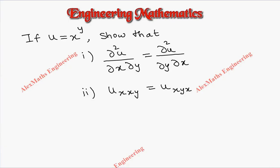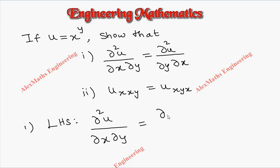Hi students, this is Alex. u is given as x^y. We have to show that ∂²u/∂x∂y equals ∂²u/∂y∂x. Let's take the first part. We are going to take the left-hand side, that is ∂²u/∂x∂y. We rewrite this as ∂/∂x of (∂u/∂y). So first we find the partial derivative with respect to y, and then that result we differentiate with respect to x.